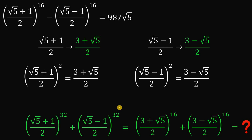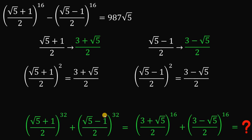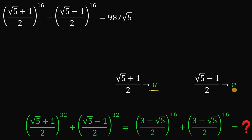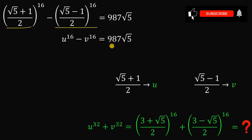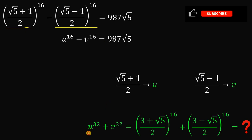To simplify, let u = (√5 + 1)/2 and v = (√5 − 1)/2. Our expression to find becomes u³² + v³². The original given equation can be rewritten as u¹⁶ − v¹⁶ = 987√5.